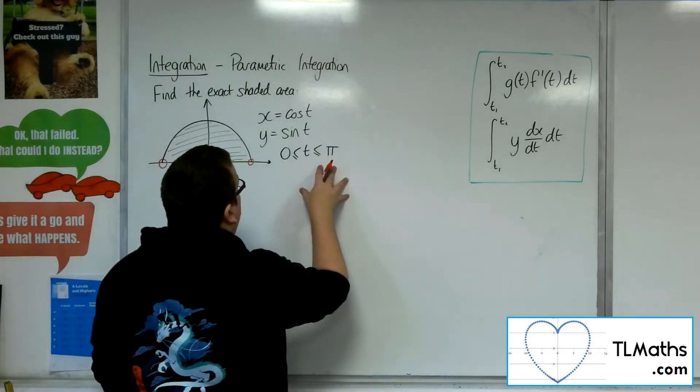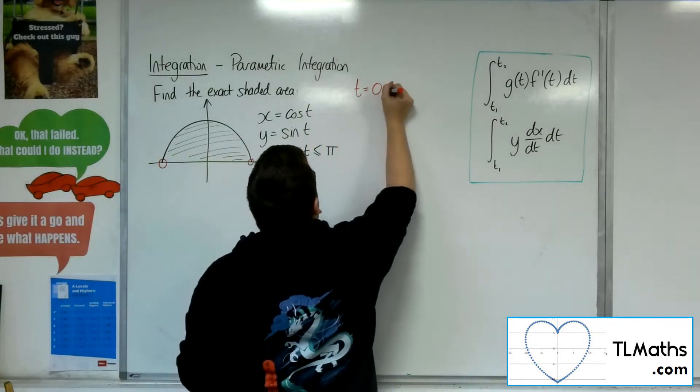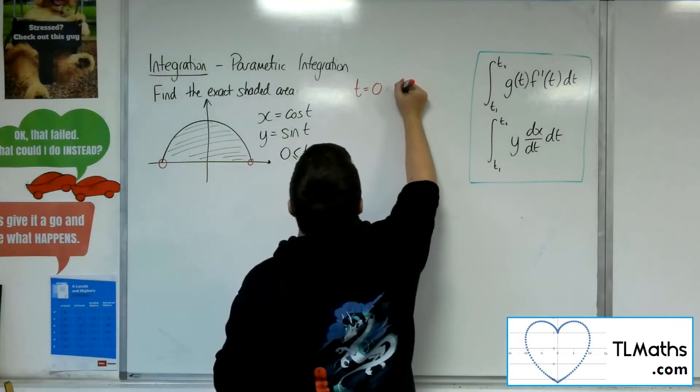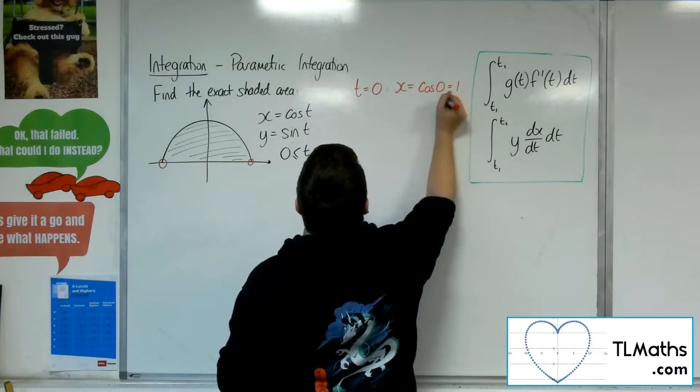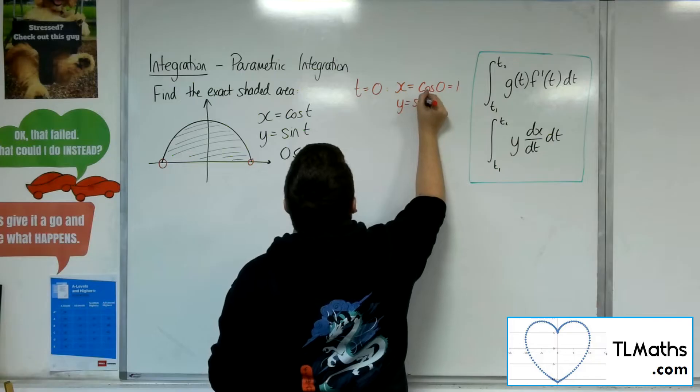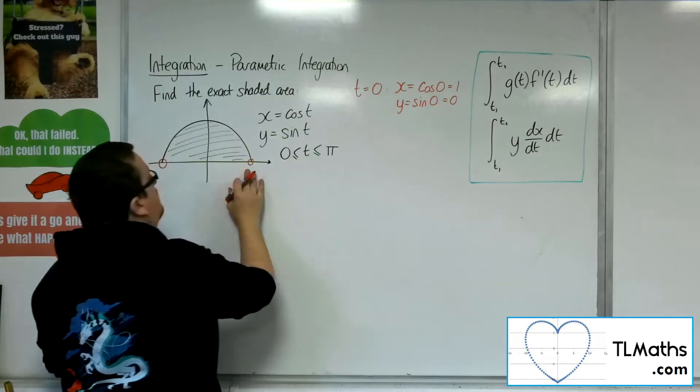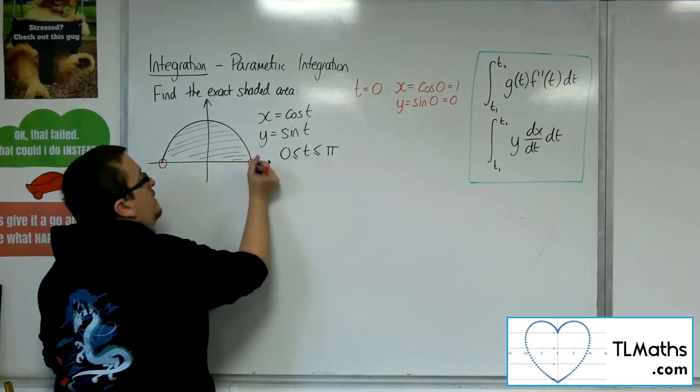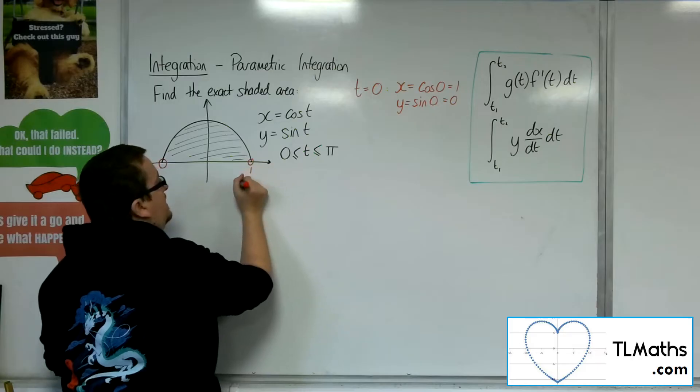So when t is 0, we would have x to be cosine of 0, which we know is 1, and y equals sine of 0, which we know is 0. So 1, 0, so that makes sense as that point there. So that's when t is 0.